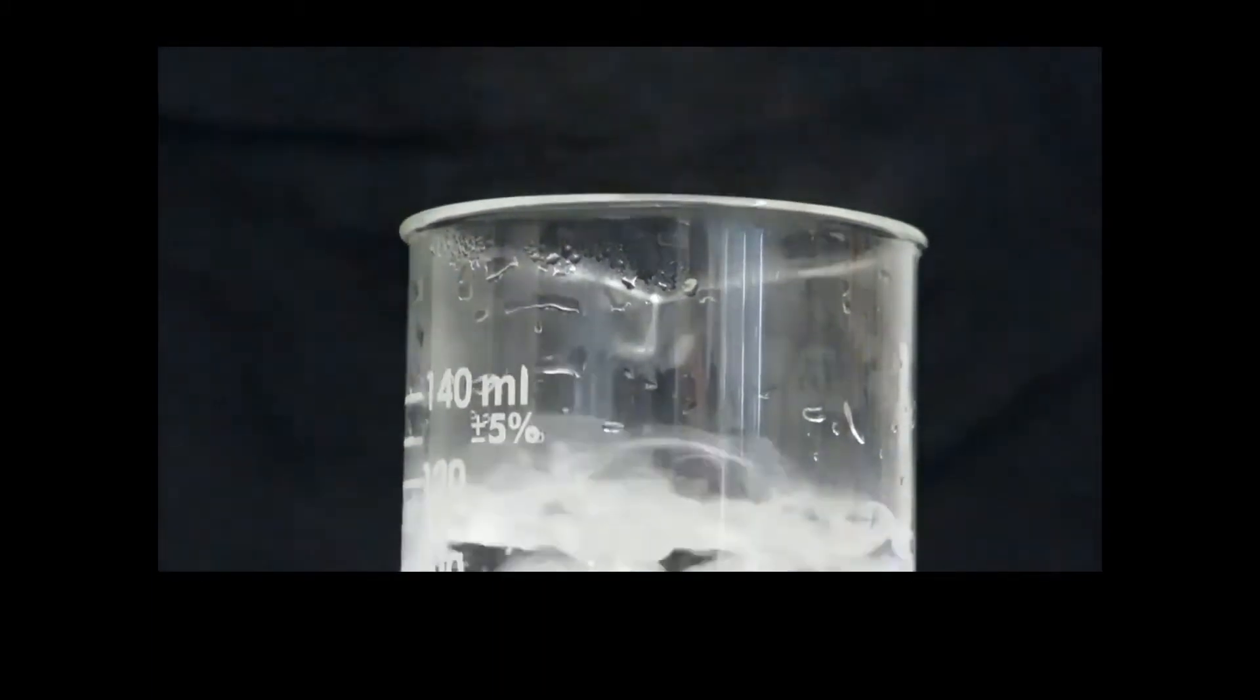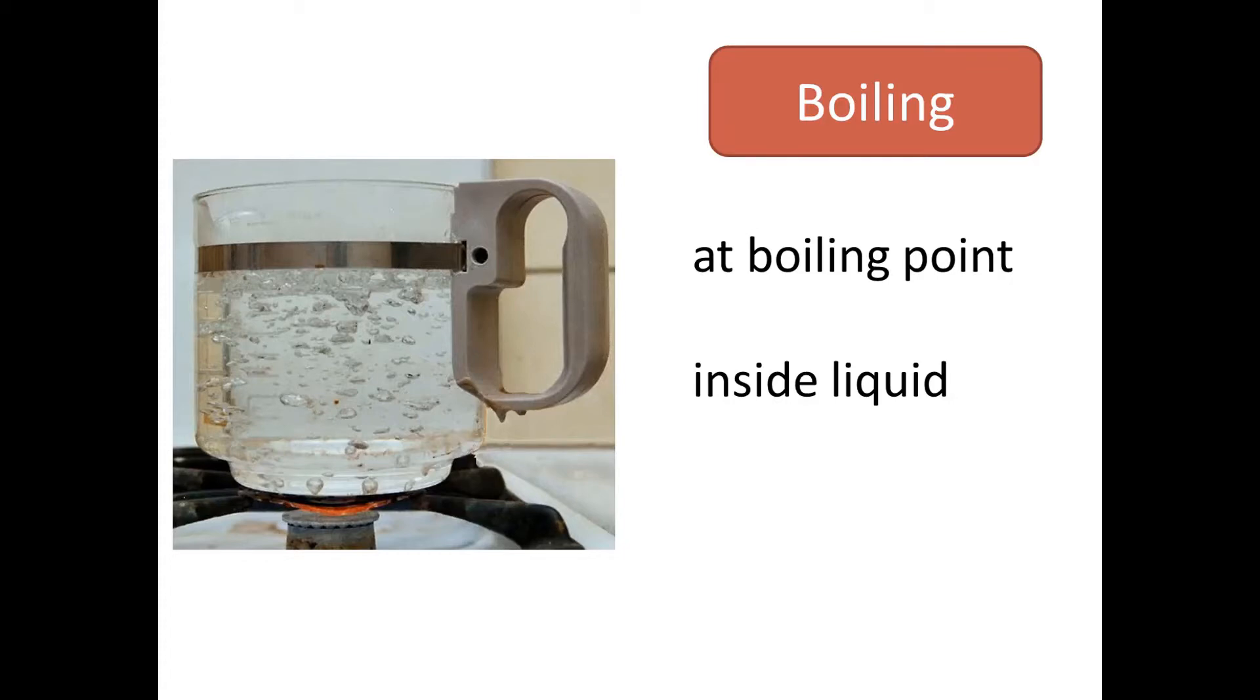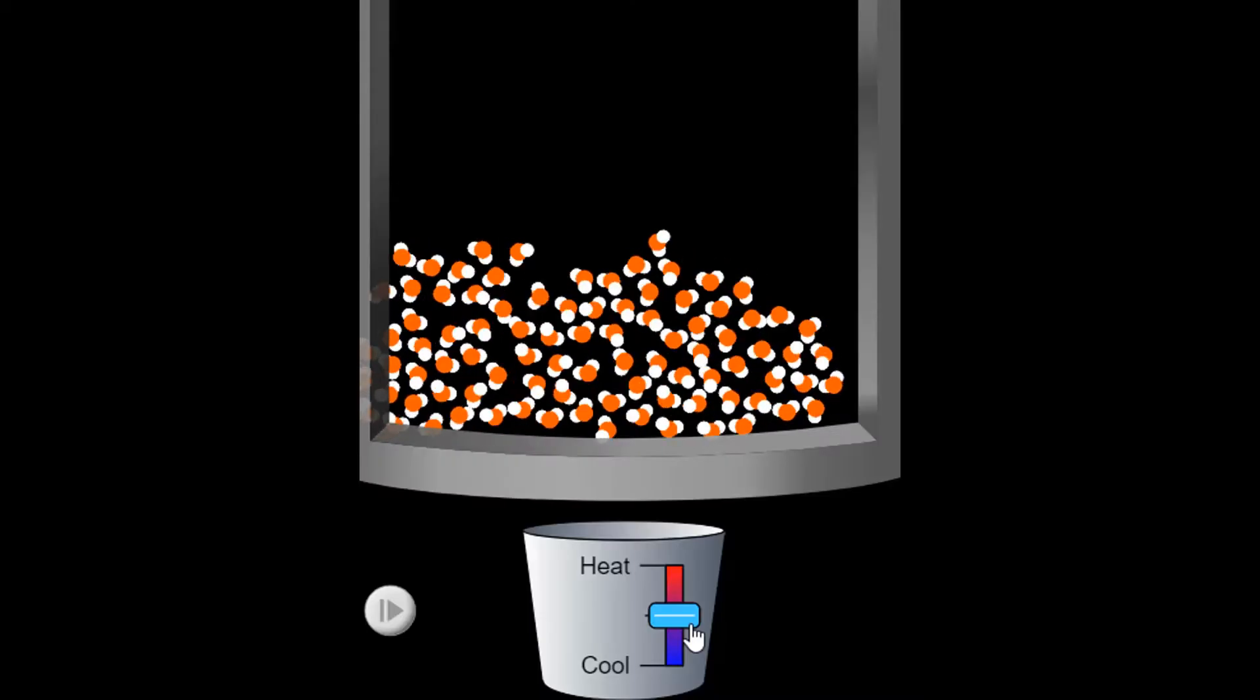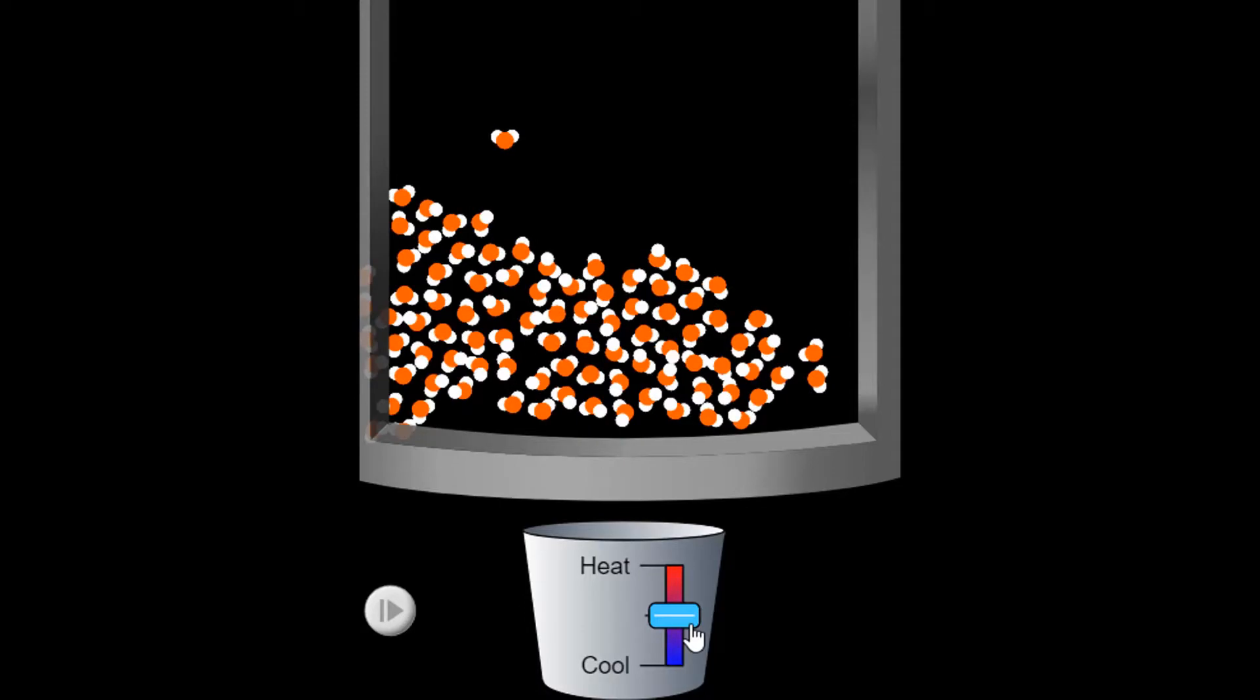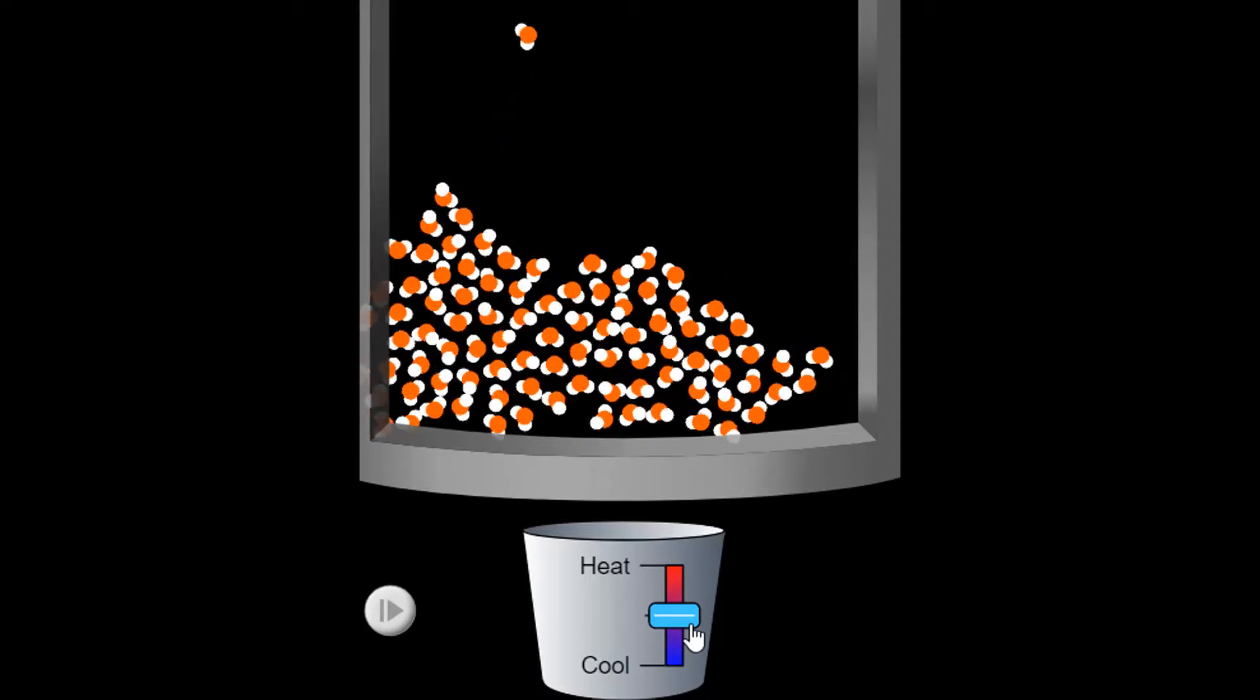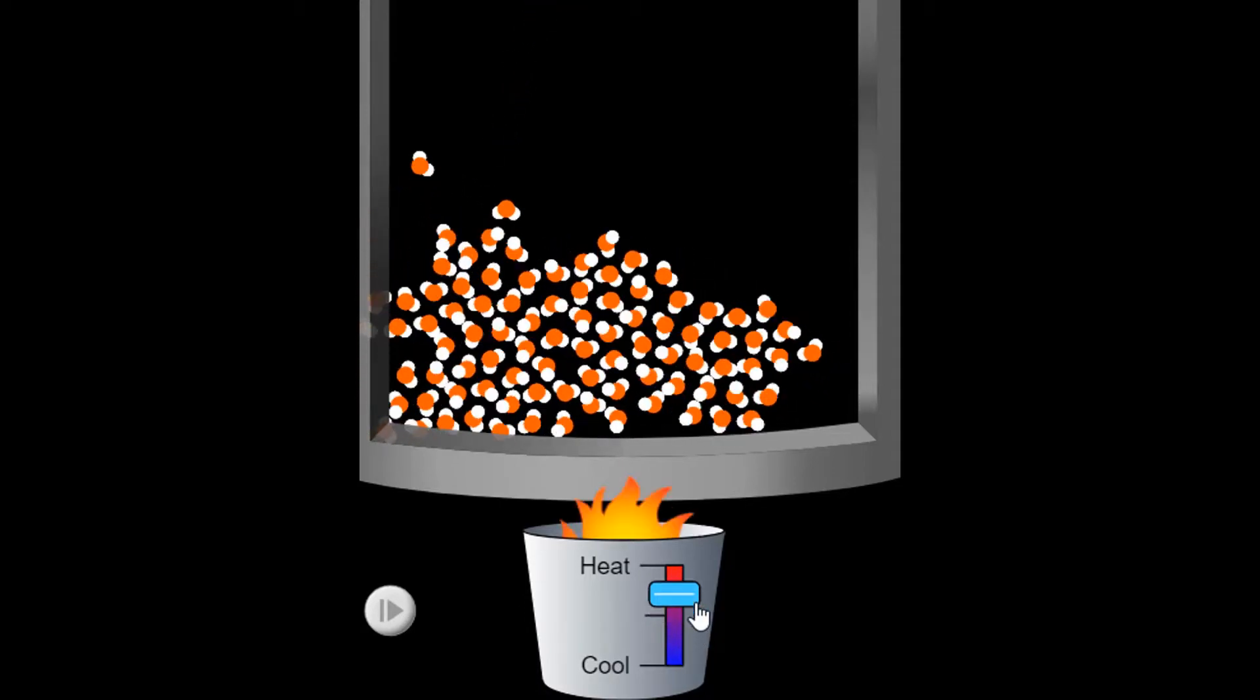What's going on during boiling and why does it only happen at one particular temperature, called the boiling point, for a certain pressure? At any temperature, some of the faster moving particles within the body of the liquid will try to break their intermolecular bonds and vaporize.